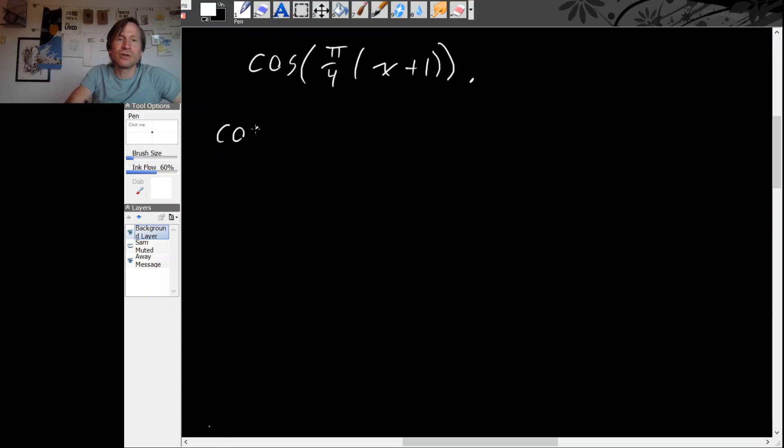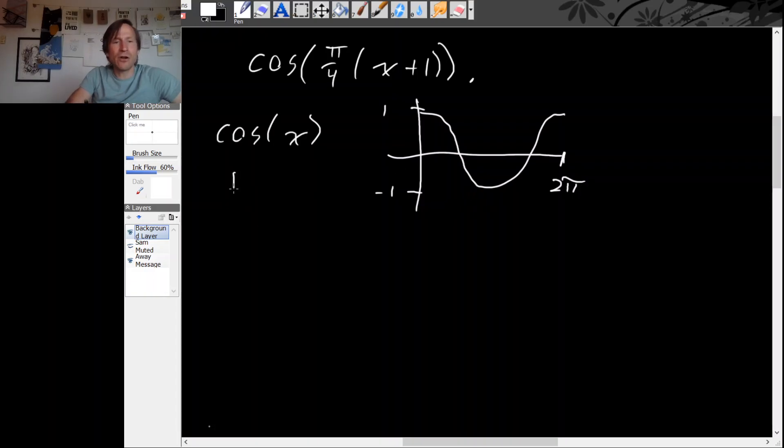Okay, so we're still going to start with cosine x, which looks like this, going from between 1 and minus 1 in the vertical direction and completing a cycle in 2 pi. Now the mistake people make is they aren't careful about the order that they do their operations. So first they replace x with x plus 1. That gives you cosine of x plus 1. And that shifts left 1.